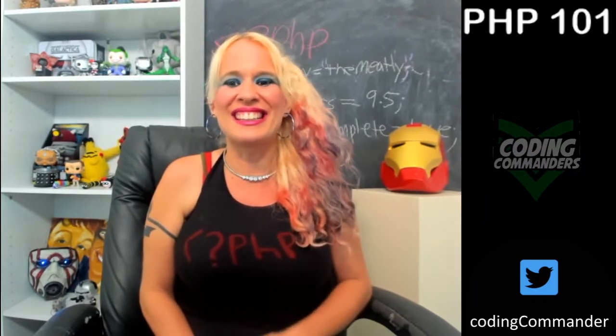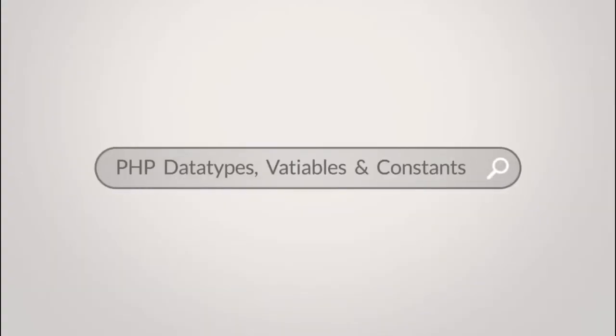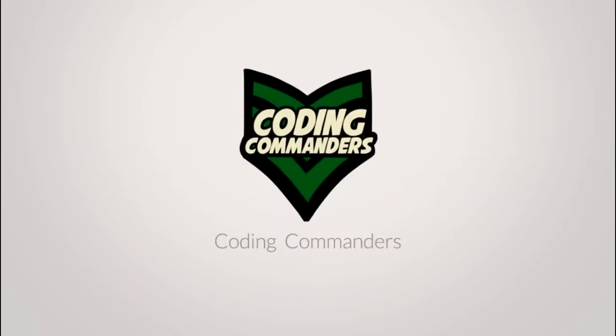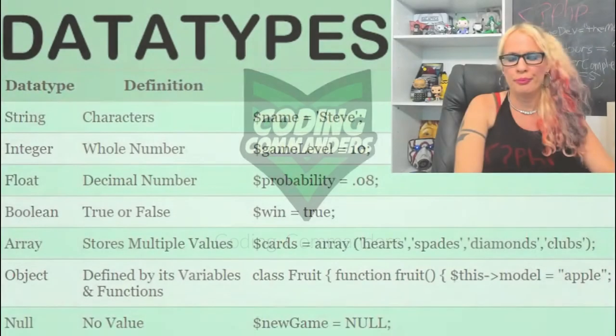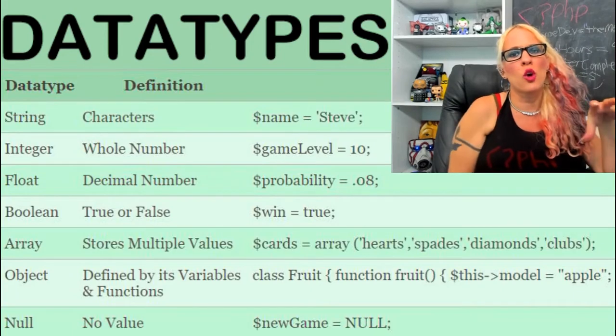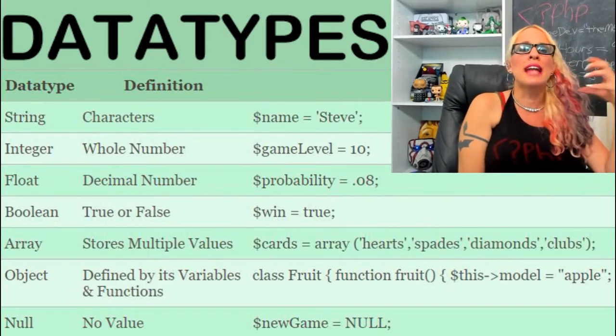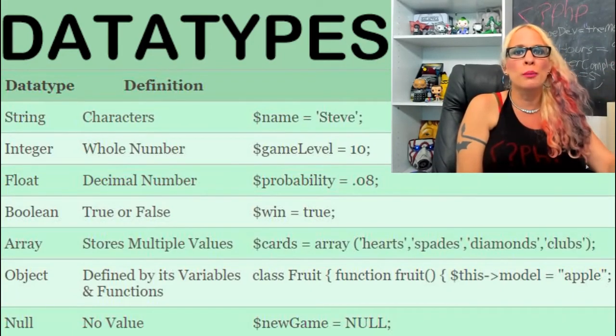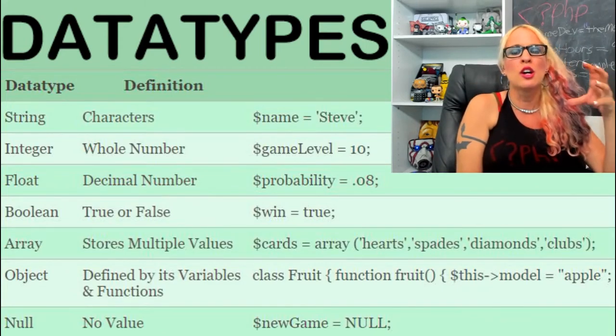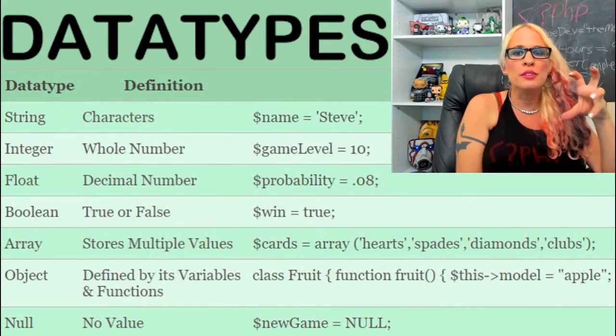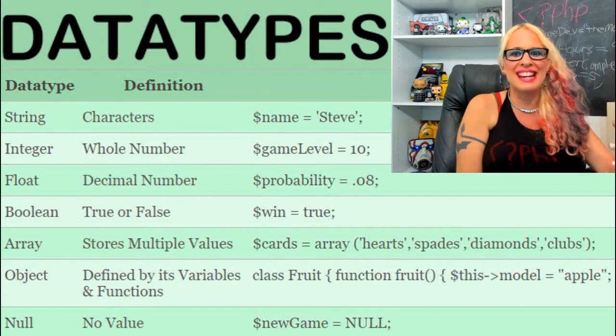PHP is a very commonly used language for web development. There's a ton of jobs in it. To start off we're going to talk about data types. Now in PHP and other programming languages, you're going to have variables and constants. What variables and constants do is they represent a value.